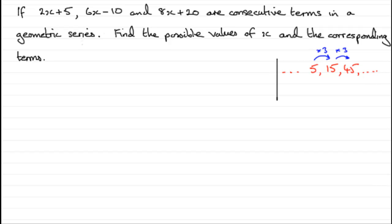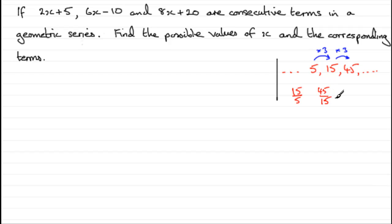Now there's a relationship that always exists between consecutive terms. That is, if I took the 15 and divided it by the 5, I'd get 3 — the multiplying factor, the common ratio. And it's exactly the same if you take 45 and divide it by the preceding term 15: 45 divided by 15 also comes to 3. So these two are equal, and they equal that common ratio of 3.